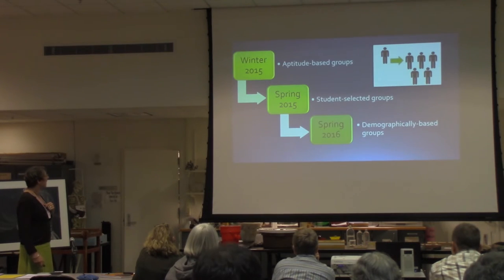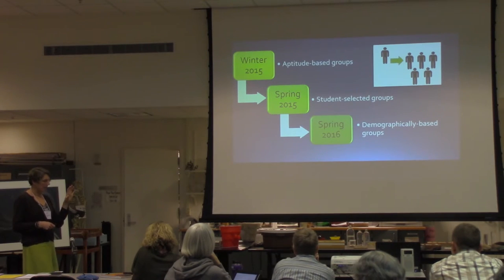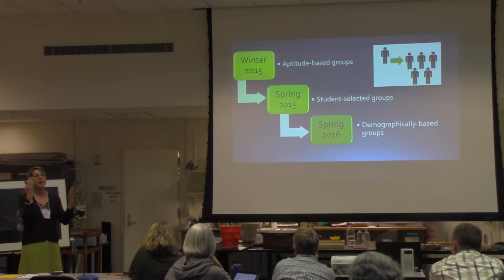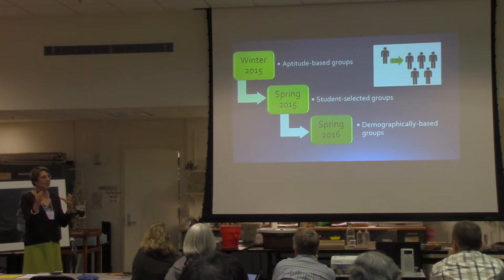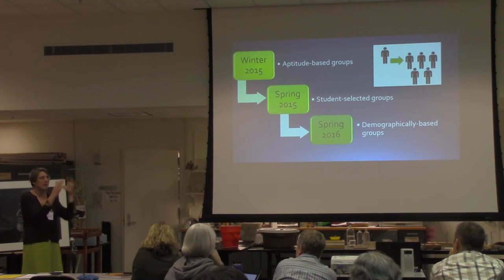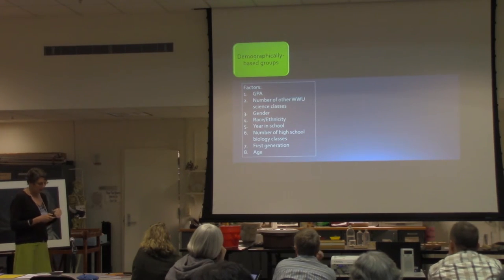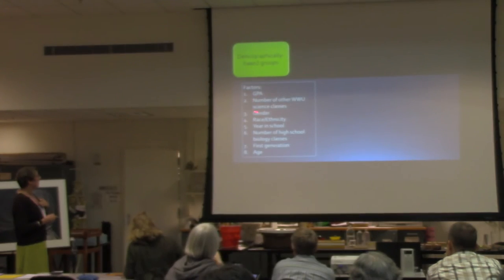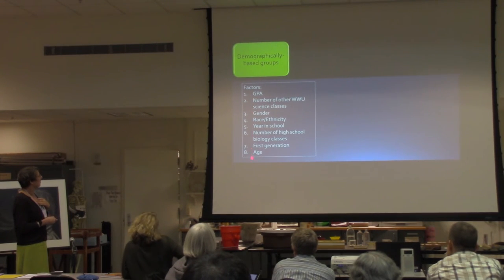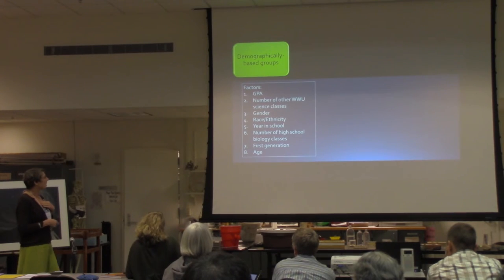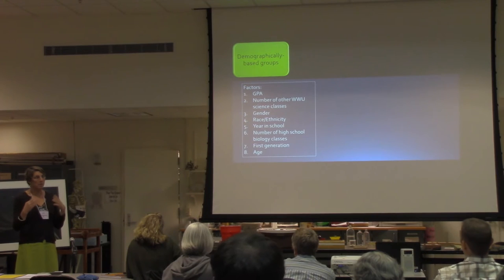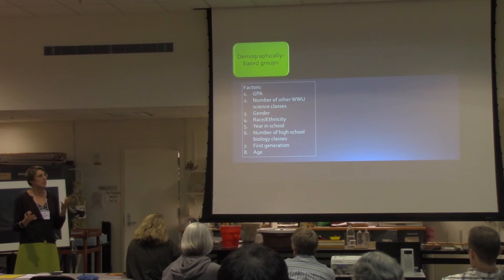For the third and ongoing study, we are using a demographic survey approach. Giving a pre-assessment on the first day and getting students into groups before the next class is logistically challenging, so we explored whether demographic variables could predict pre-assessment scores. We asked about GPA, number of science classes taken, gender, race and ethnicity, year in school, number of high school biology classes, first-generation status, and age.